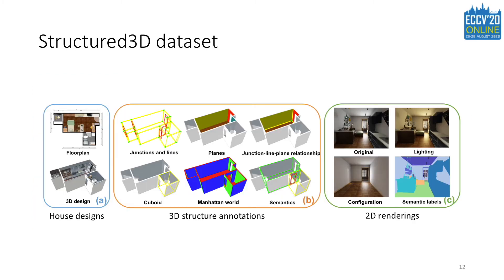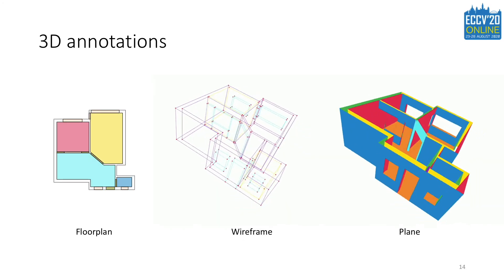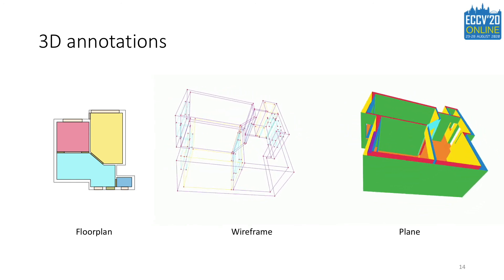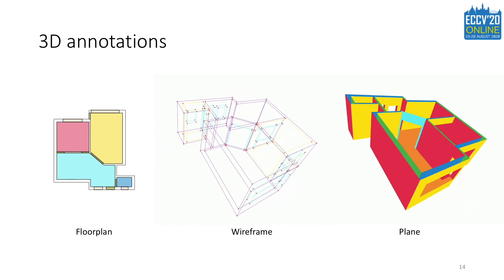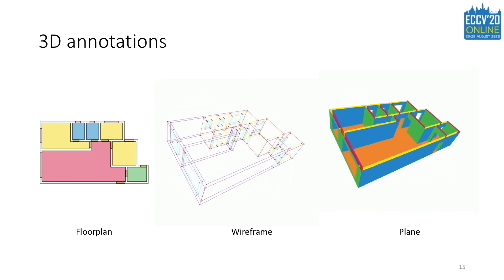Currently, our dataset consists of more than 196,000 images of 21,835 rooms in 3,500 scenes. Compared to existing datasets with structure annotations, our dataset contains a diverse number of scenes and frames with multiple types of 3D structure. Based on the primitive and relationship representation, we can generate various types of structures, such as floor plan, wireframe, and planes.